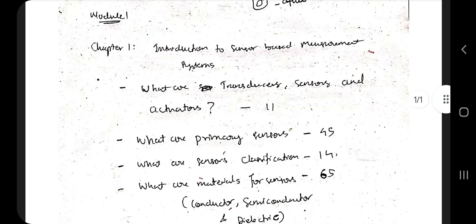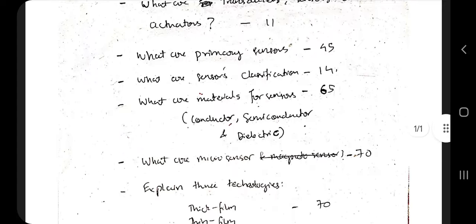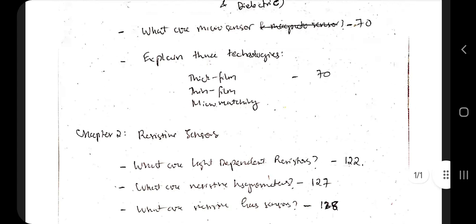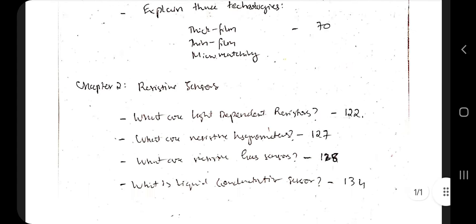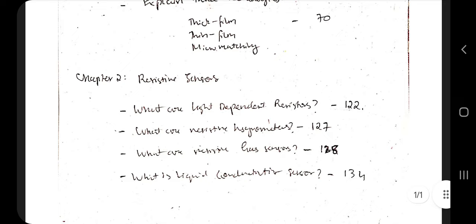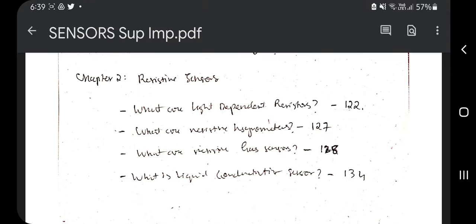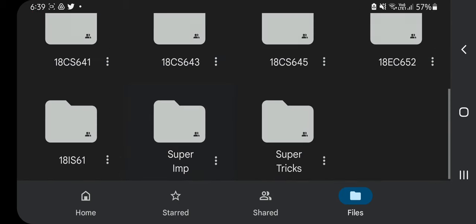Let's get started with module one. In module one you will study about sensor-based measurement systems — how you measure things and how sensors are used in measurement. There are two things: chapter one is about sensor measurement, and the second is resistive sensors.